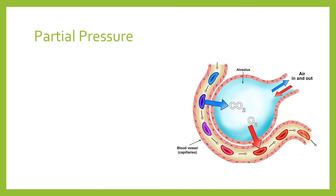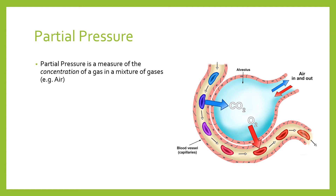In order to make a bit more sense of exactly how gases flow from one place to another, we need to talk about a concept called partial pressure. Partial pressure is a measure of the concentration or proportion of a gas in a mixture of gases. It's not exactly the same as concentration, but since the proportions are the same we might as well use them synonymously for the sake of this video.